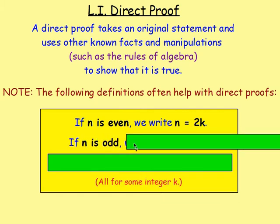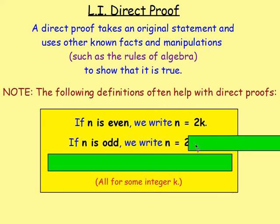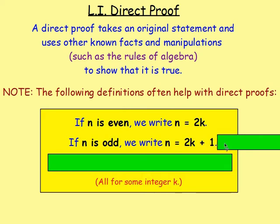A lot of the time you may have to have N as an odd number. For that, you would let N equal 2K first of all, because if you double K you're going to get an even number. But an odd number would always be one up from that or one below that. So you would write that N equals 2K plus 1 or 2K minus 1, because if you double a number and add on 1, you always get an odd number.